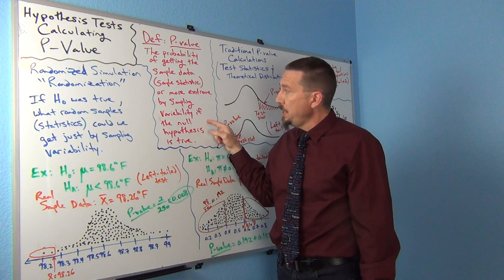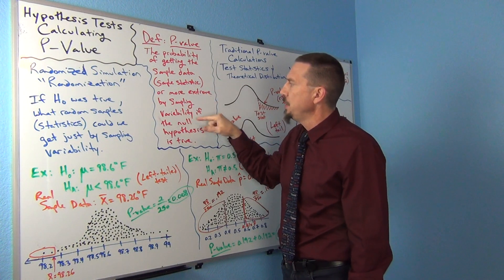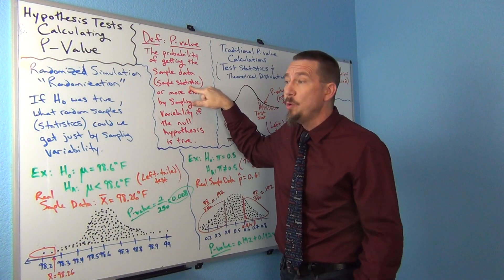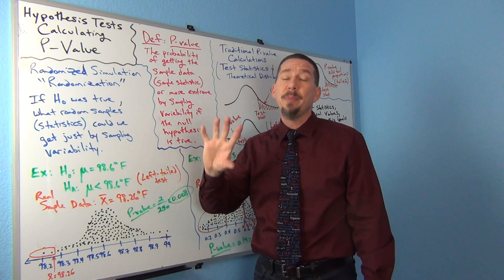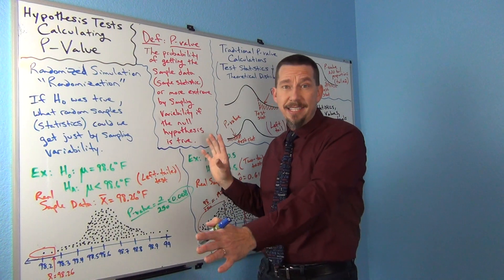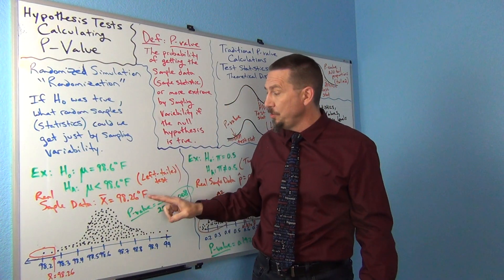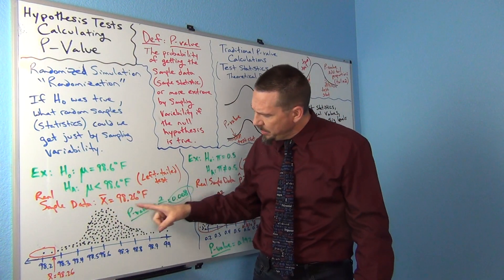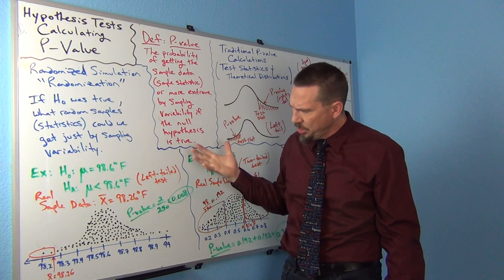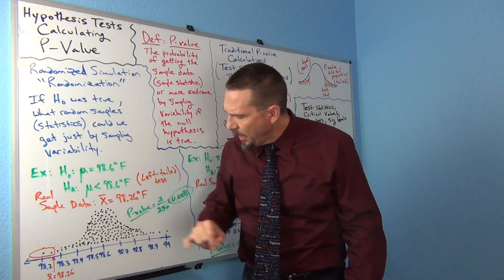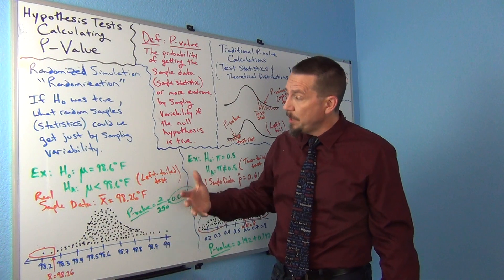Going back to the definition: now that we have that simulated distribution, we can find the probability of getting the sample statistic or more extreme by sampling variability. The sample statistic — what really happened — is our real sample mean of 98.26 degrees Fahrenheit. In simulation you'll have hundreds or thousands of simulated sample means, but there'll only be one real sample mean. Don't lose track of which one was your real sample mean. So the p-value is the probability of getting a sample mean of 98.26. But there's also that 'or more extreme' part. Since less than is our alternative hypothesis, this would be a left-tail test — less than points to the left.